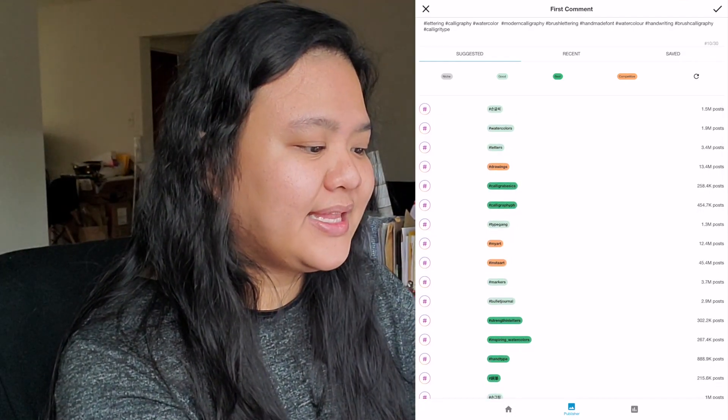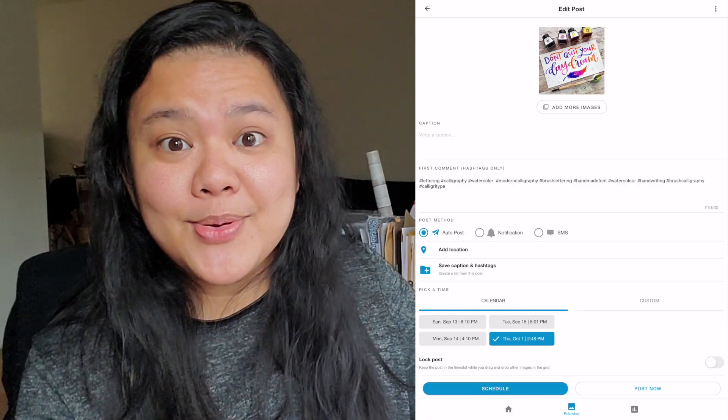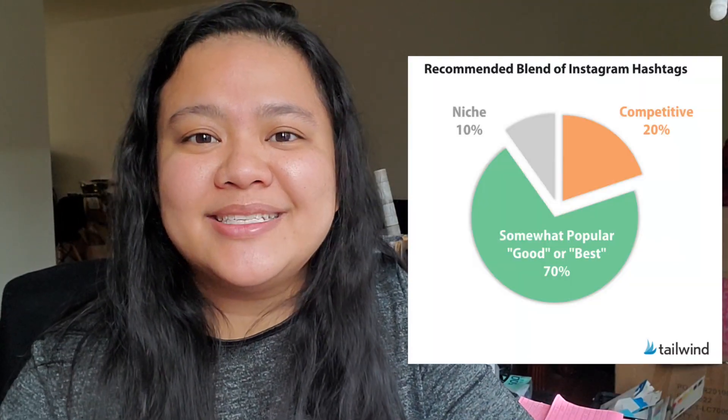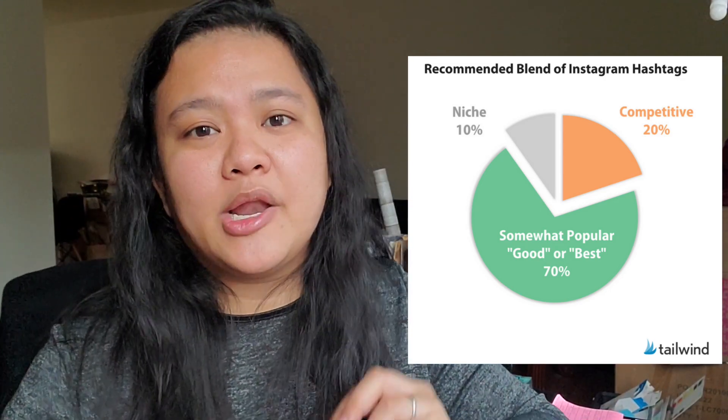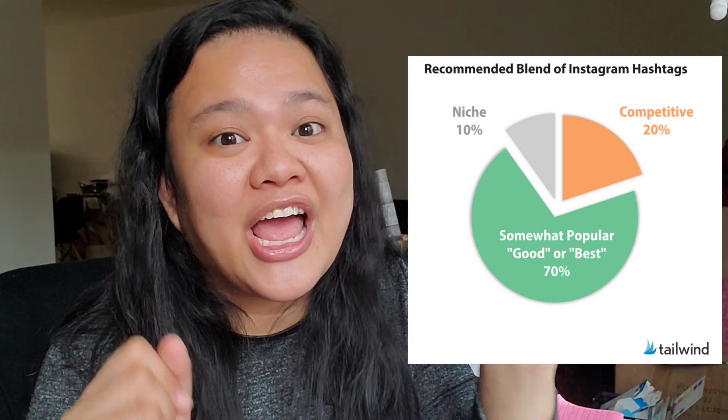And there you have it. The reason I really like using this app to select hashtags is that it takes the thinking part out. I used to always try and experiment — you should still do that — but this gives me some assurance that this hashtag combination will work. I consulted a very useful article by Tailwind themselves, where they suggest you use a few competitive hashtags, a bulk of good and best hashtags, and also include some niche hashtags.